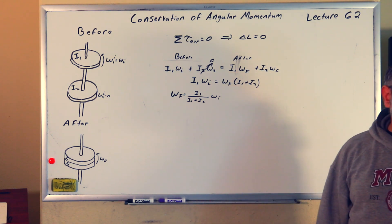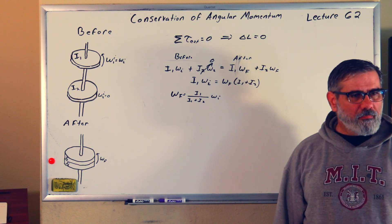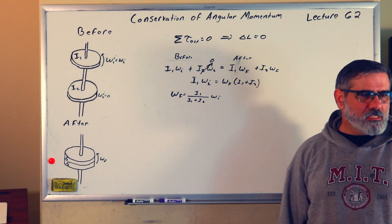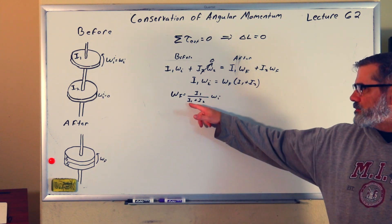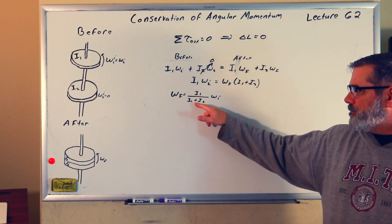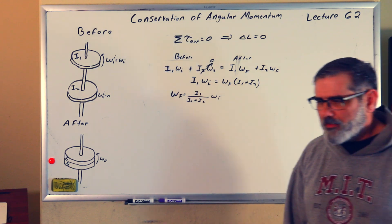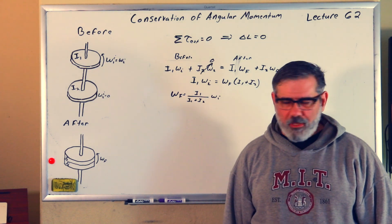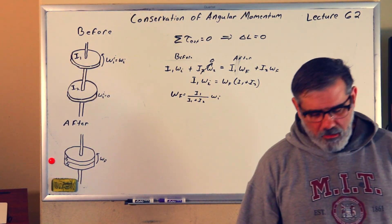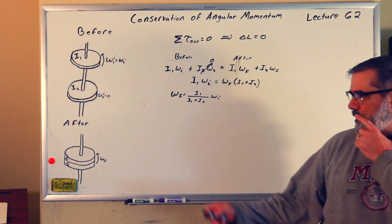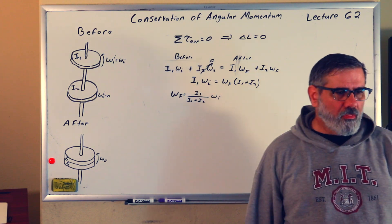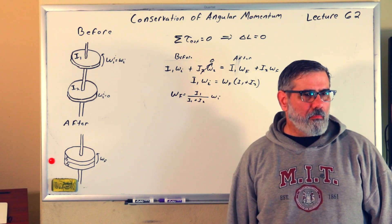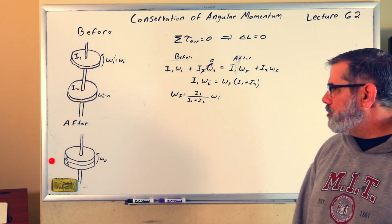So the final angular frequency is less than the initial angular frequency — which is what we expect. This is very similar to the result for inelastic collisions: just replace omega with V for velocity and replace I with M for mass. You get the same situation as conservation of linear momentum with an inelastic collision of two bodies.